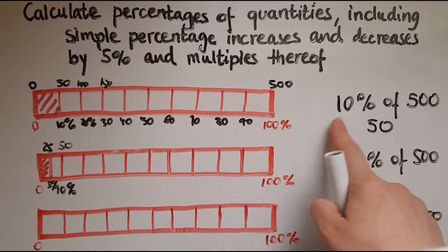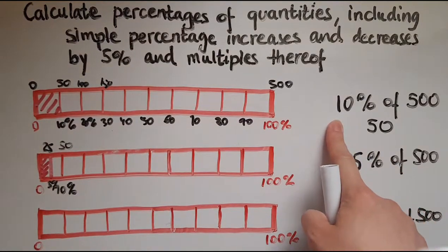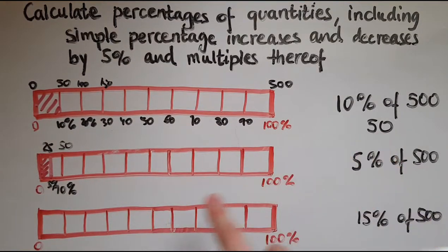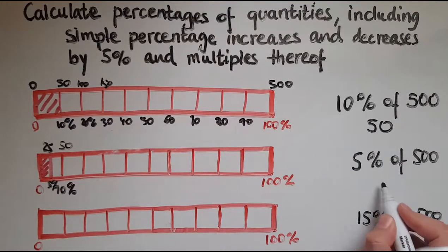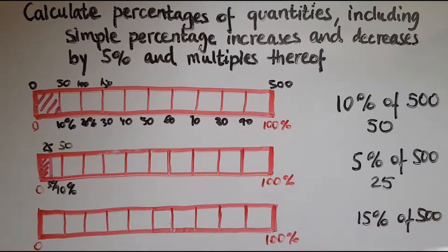So by having 10% already, all I did is half the 50 and get 25. So 5% of 500 is 25.